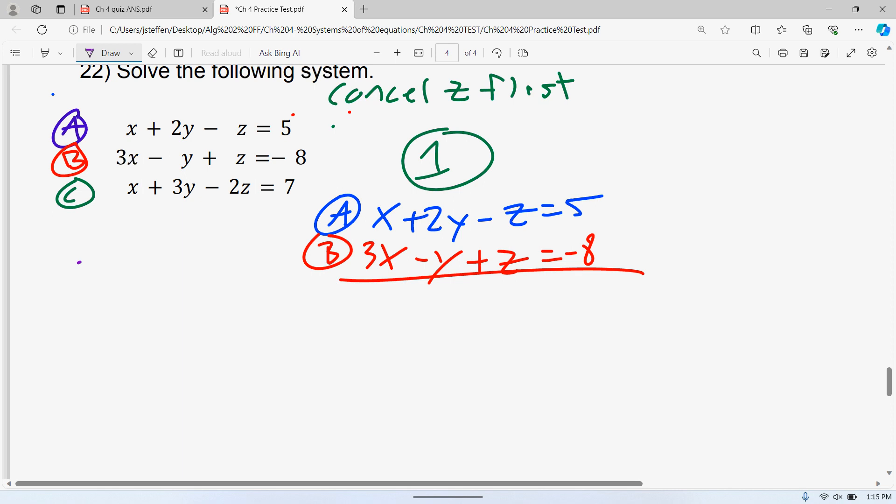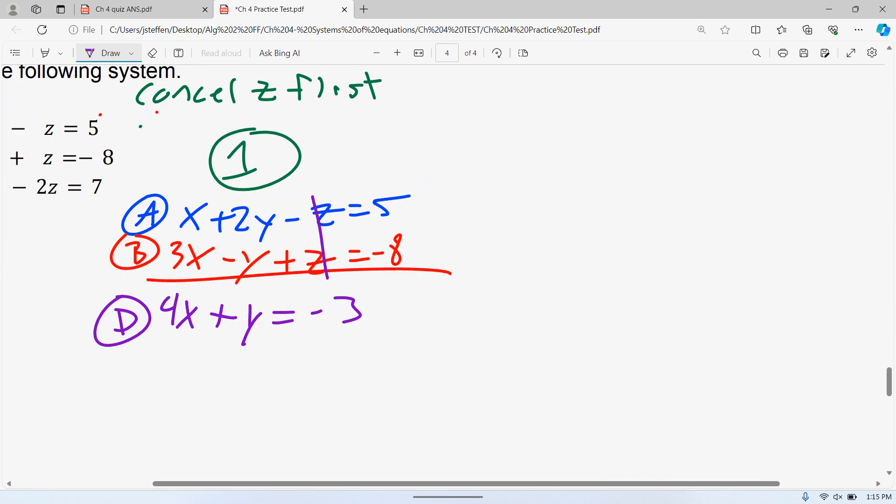So the Z's cancel. I end up with 4X plus Y is equal to 5 minus 8 is negative 3. Now, again, I call that equation D. Now, again, you do not have to label anything. But I tell you what, if you miss one negative and that's the only thing you missed, that's going to make your answer be totally off. But if I can find where you missed that negative, I can give you partial credit. I'll make half a point off out of 4. Pretty good. But if it's really sloppy and I cannot figure out where you missed your negative, that's all of a sudden where you're going to miss some more points. So I would recommend staying organized for both of our benefits.